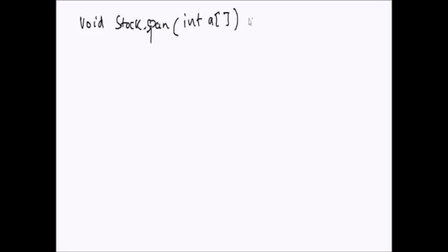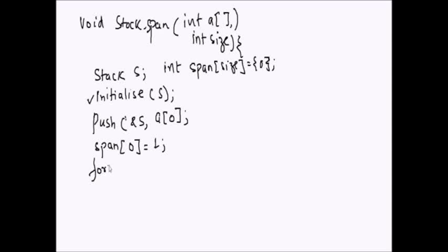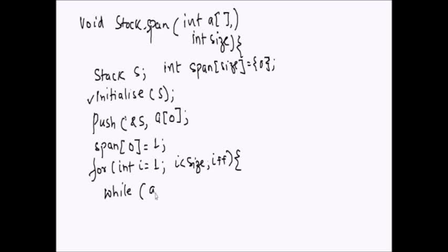We write a function: void stockSpan(int prices[], int size). Define a stack s and initialize it. Push a[0] onto the stack and set span[0] = 1. Then loop from i = 1 to i < size. Inside the loop, while the price of the current day is greater than the peek of the stack, pop the element.